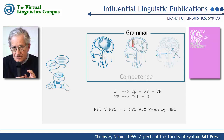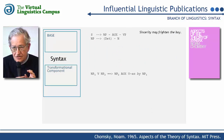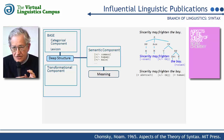These processes start in the syntactic component, which consists of a base and a transformational component. The base consists of a categorical subcomponent and a lexicon. It generates a deep structure which receives a semantic interpretation in the new semantic component.